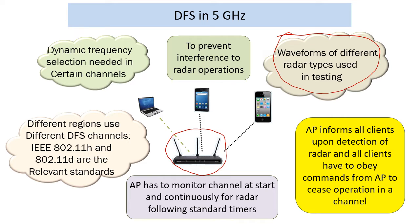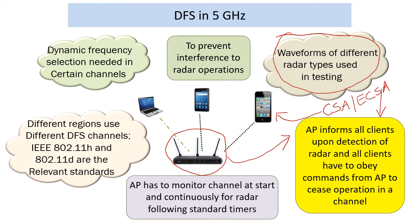The access point, once it detects a radar within thresholds, has to inform the associated clients using typically the channel switch announcement or the extended channel switch announcement. Clients on their part need to support this so that they can move to a channel which is non-DFS or for which a DFS check has been done by the AP through various other means. This has been around for quite some time.